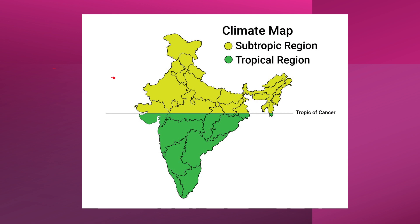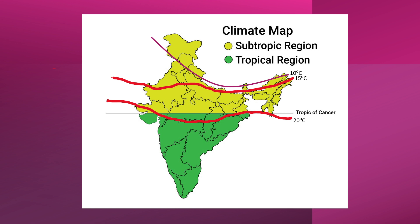The northern two-thirds of the country has a mean temperature below 21 degrees centigrade. January is the coldest month, when the temperature in the Ganga Plain varies between 12.5 to 17.5 degrees centigrade. The southern one-third has rather warm conditions and does not have a distinctly defined winter season. The isotherm of 20 degrees centigrade runs in an east-west direction, roughly parallel to the Tropic of Cancer, and divides India climatically into the northern and southern parts.